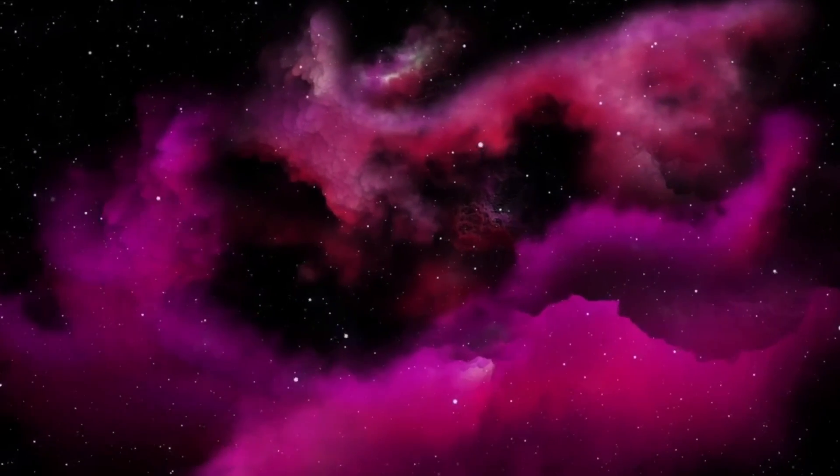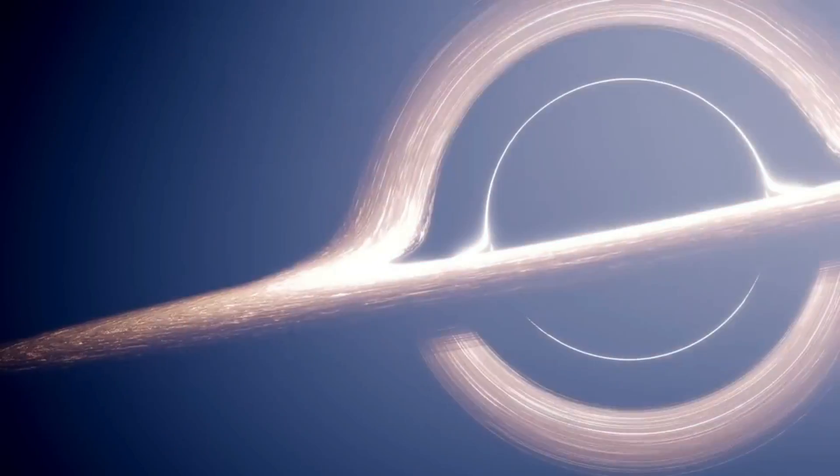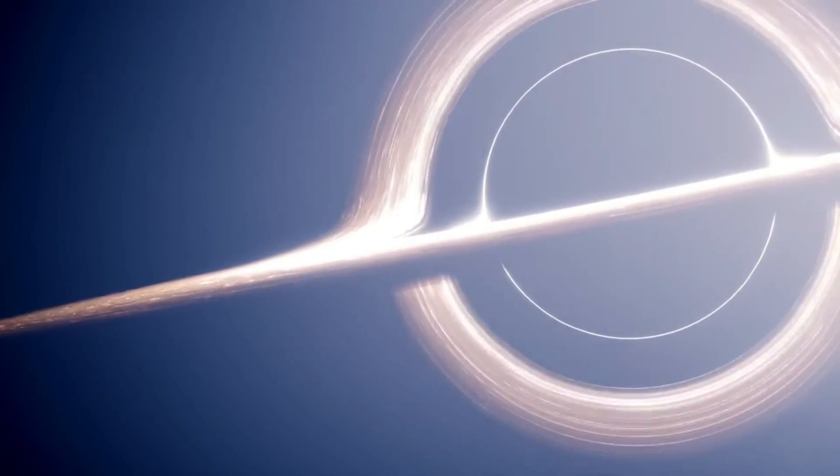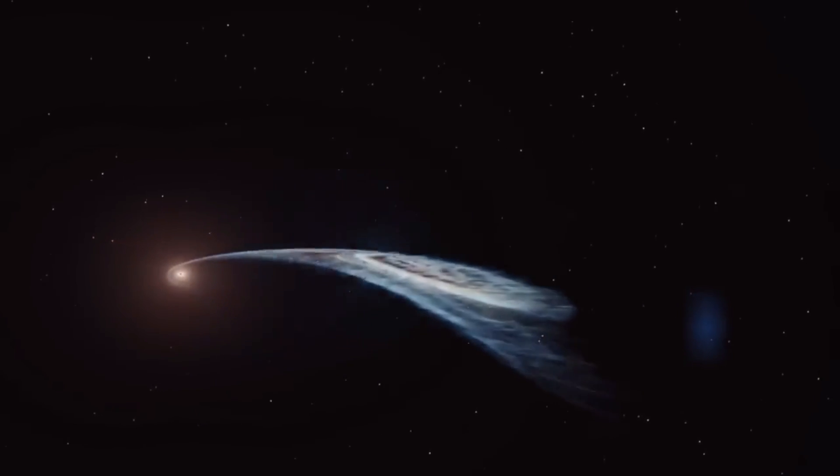The event horizon of a black hole is defined at the point at which the escape velocity exceeds the speed of light, making escape impossible once the event horizon is crossed.